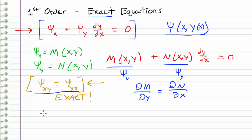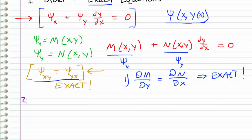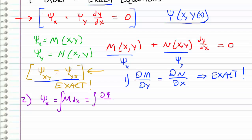If that condition holds, the equation is exact and we can proceed. The next step is to take psi sub x — which is just our function M — and integrate it with respect to x. This is equivalent to integrating the partial derivative of psi with respect to x dx. The result gives us a function of x and y, plus an arbitrary function of integration that depends only on y.